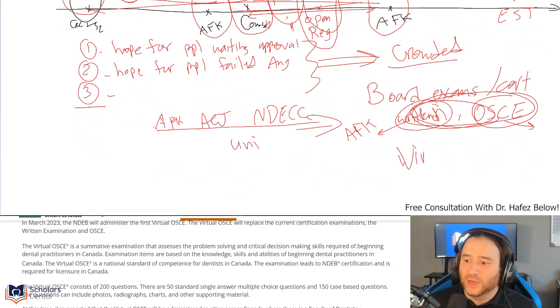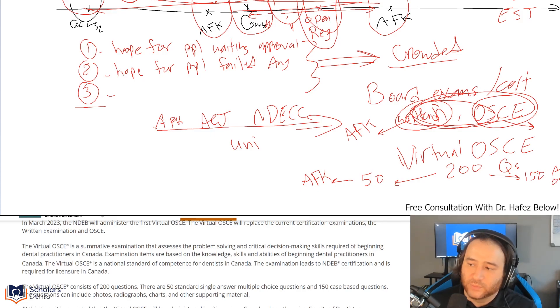Virtual OSCE is going to have 200 questions. 50 of them are AFK style and 150 are case-based style, which means OSCE ACJ style. I like that. Now they have just one exam. They're kind of increasing the OSCE ACJ part and decreasing the AFK part or the multiple choice question part.